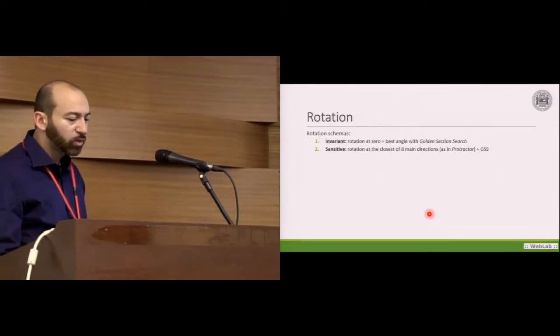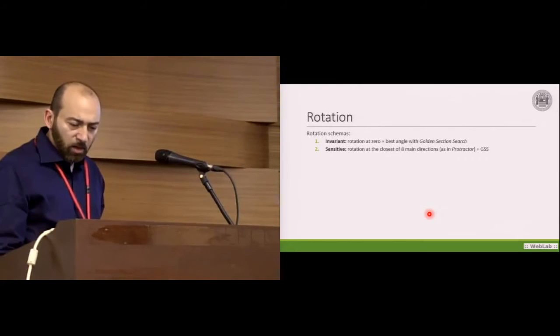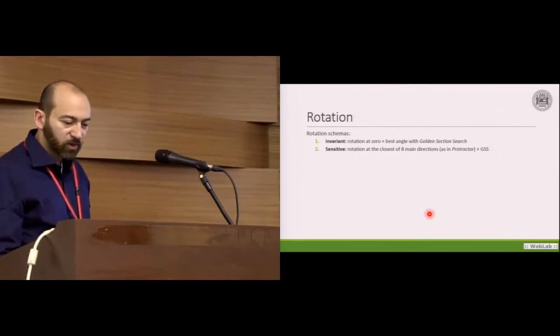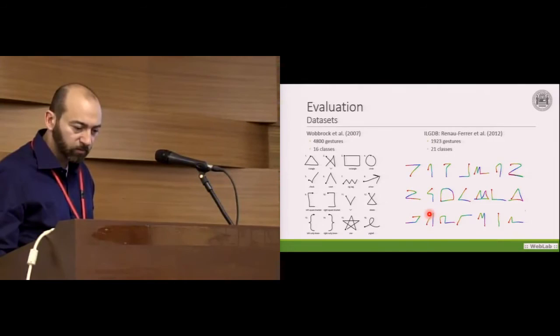We can have two different rotation schemas: invariant and sensitive. In the former, the gestures are rotated at zero and then we have a golden section search. In the latter, they are rotated at the closest of the eight directions.